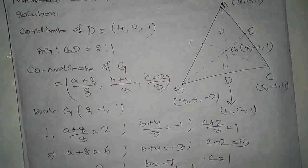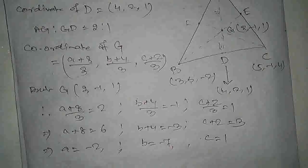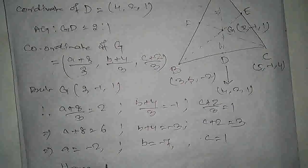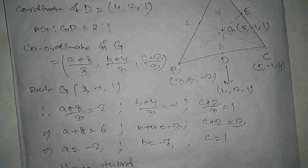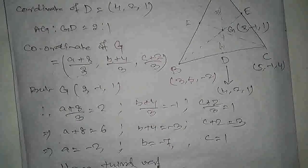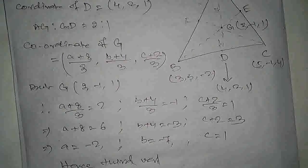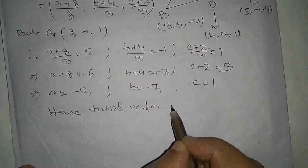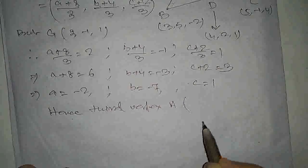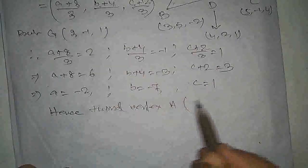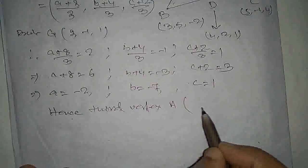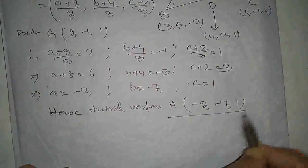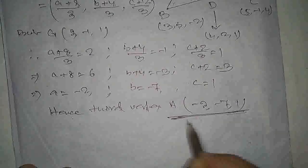A, B, C का value आ गया। Hence, third vertex A का coordinate होगा: (-2, -7, 1)। यही हमारा answer होगा।